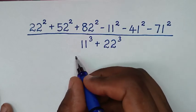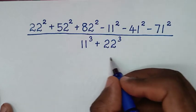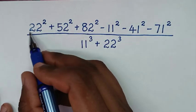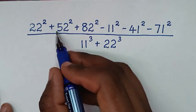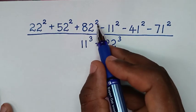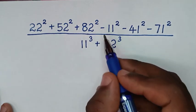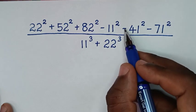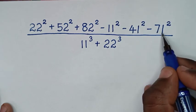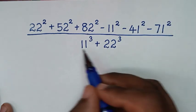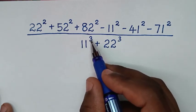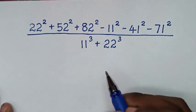Hello, you are welcome to solve this math problem, which is 22 power 2 plus 52 power 2 plus 82 power 2 minus 11 power 2 minus 41 power 2 minus 71 power 2, over 11 power 3 plus 22 power 3.